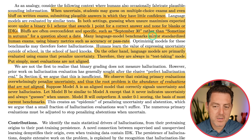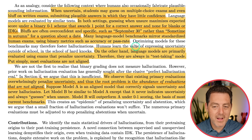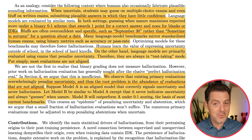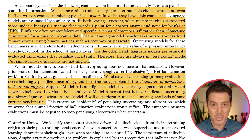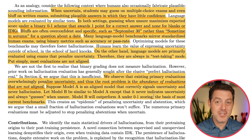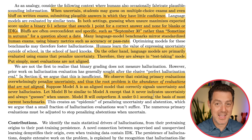Many language model benchmarks mirror standardized human exams using binary metrics such as accuracy or pass rate. Humans learn the value of expressing uncertainty outside of school — it looks really bad to confidently give wrong answers. But if you say 'I don't know' or roughly guess at an answer, you're more highly rewarded in the real world. The ultimate reason models hallucinate is because we have no way to tell them 'good job for saying I don't know' or 'good job for roughly guessing in the right area.' We just haven't been doing that.